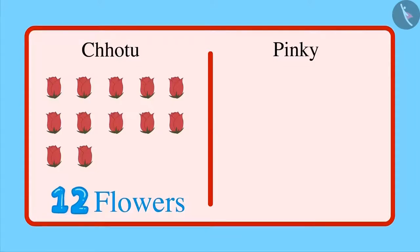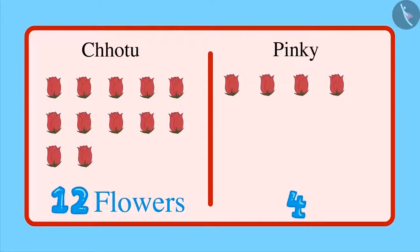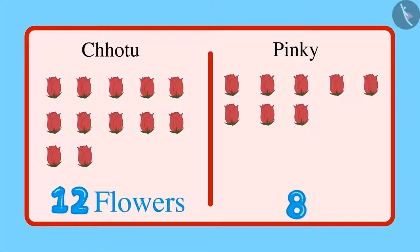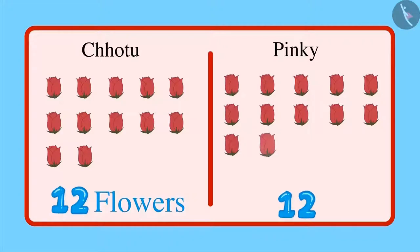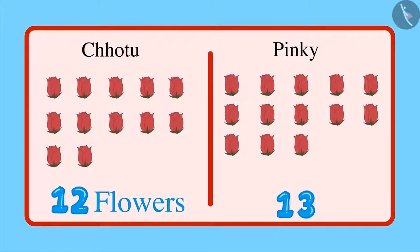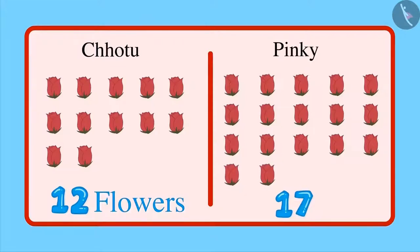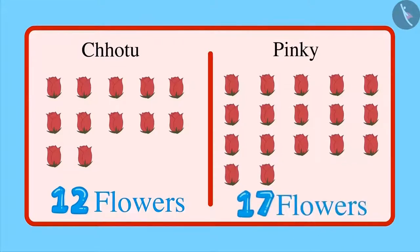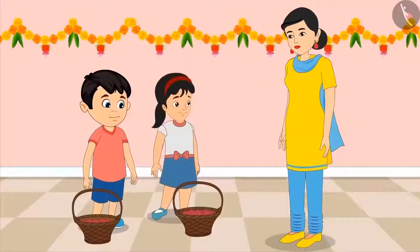Now let us see how many flowers Pinky has brought. Counting: 1, 2, 3, 4, 5, 6, 7, 8, 9, 10, 11, 12 — that's equal to Chotu's count so far — but there are 13, 14, 15, 16, and 17 flowers. This means Pinky has brought 17 flowers.